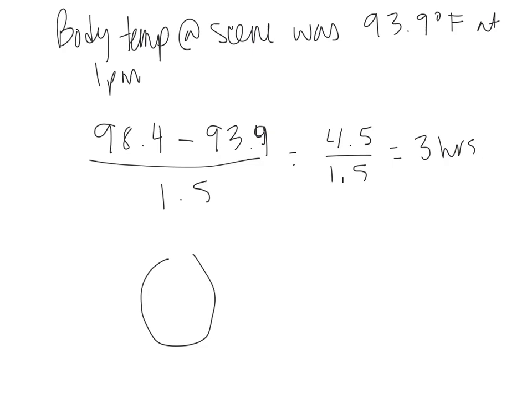This measurement was taken at 1 PM, so using your clock — 12, 3, 6, 9 — if we're at 1 PM and go back three hours, that puts time of death at 10 AM.